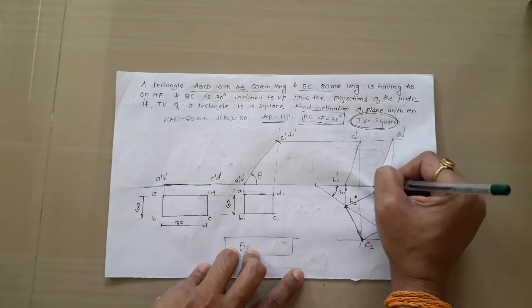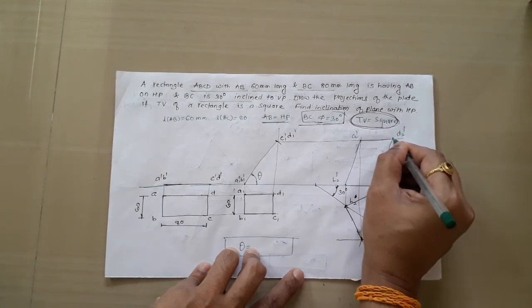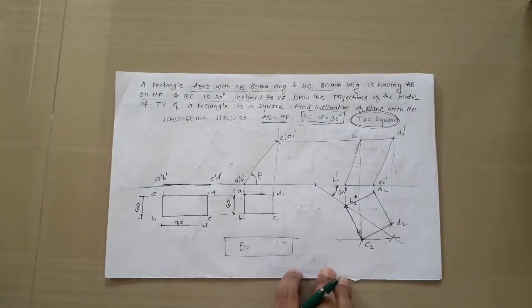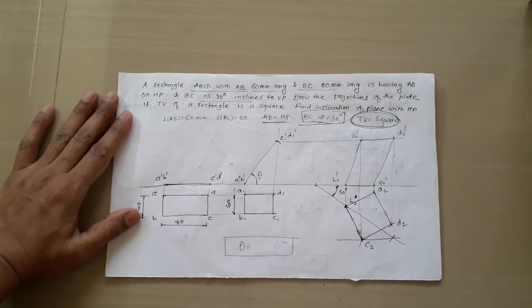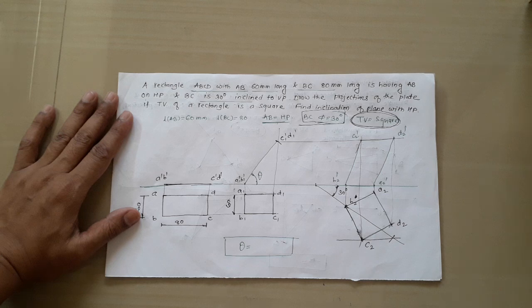Join the points in proper sequence to get the final front view of the plane. This completes the third type of problem, where the given data includes the plane shape, a reduced shape, and one inclination. Don't forget to like and subscribe to the channel. Thank you.